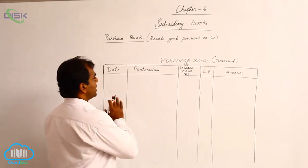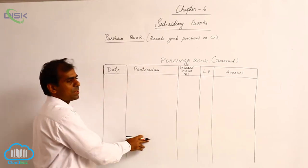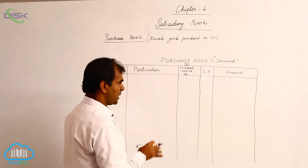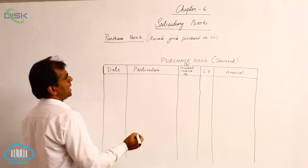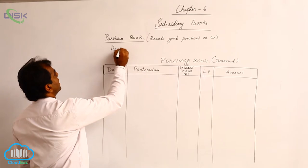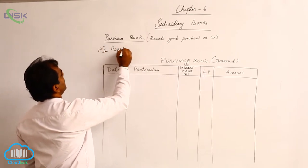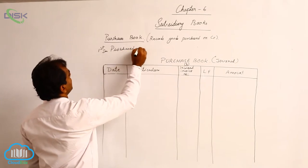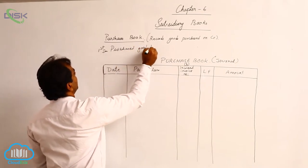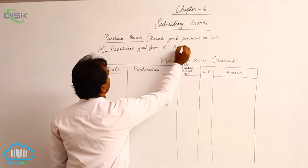Now as you know, in date we have to record the date. Now what is this particulars column used for? It is very simple. Let us say I take one example of a transaction. The transaction is, on 1st January, purchased goods from A for Rs. 6000.